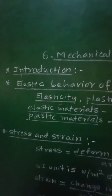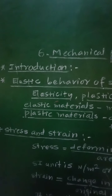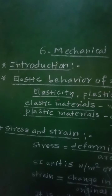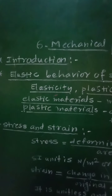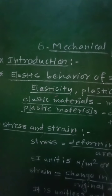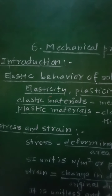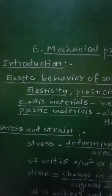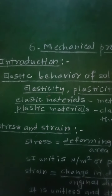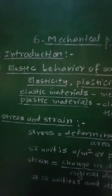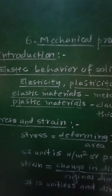The solids are made up of atoms or groups of atoms, which we call molecules, placed in a definite geometric arrangement. Due to this definite geometric arrangement, solids possess a definite shape and size.